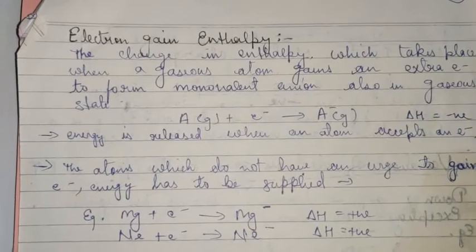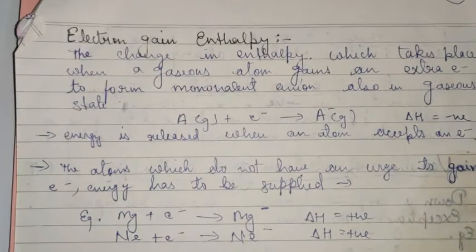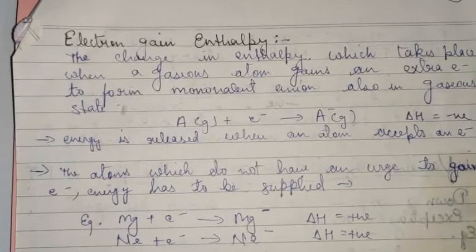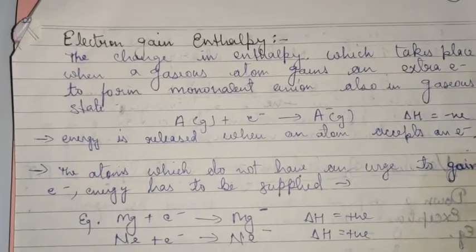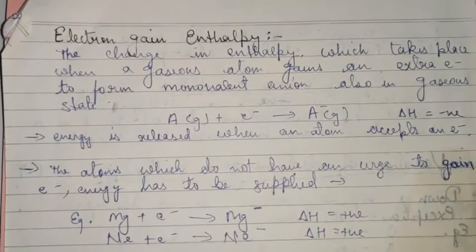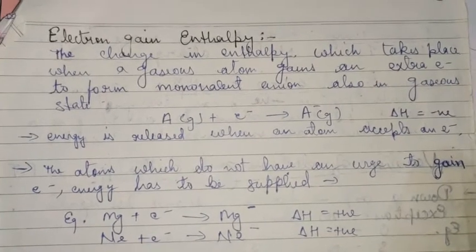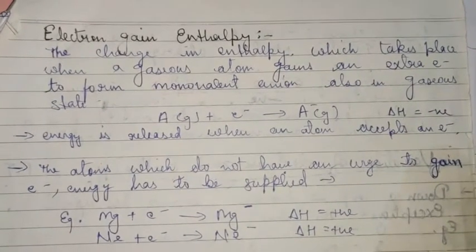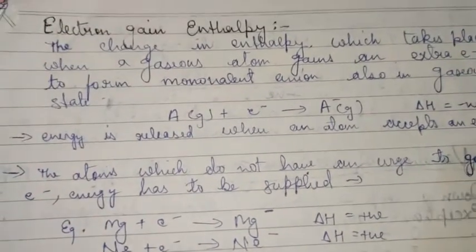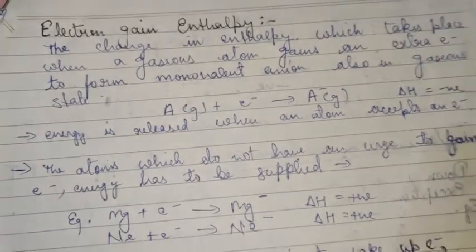The term 'enthalpy' is used here, which is new to you. For now you can understand enthalpy as energy. You will be using it again today in electron gain enthalpy, which is another very important periodic property, and in this also the enthalpy term is used - again referred to as energy. We will study electron gain enthalpy today, but before that let us recall two periodic properties from previous sessions.